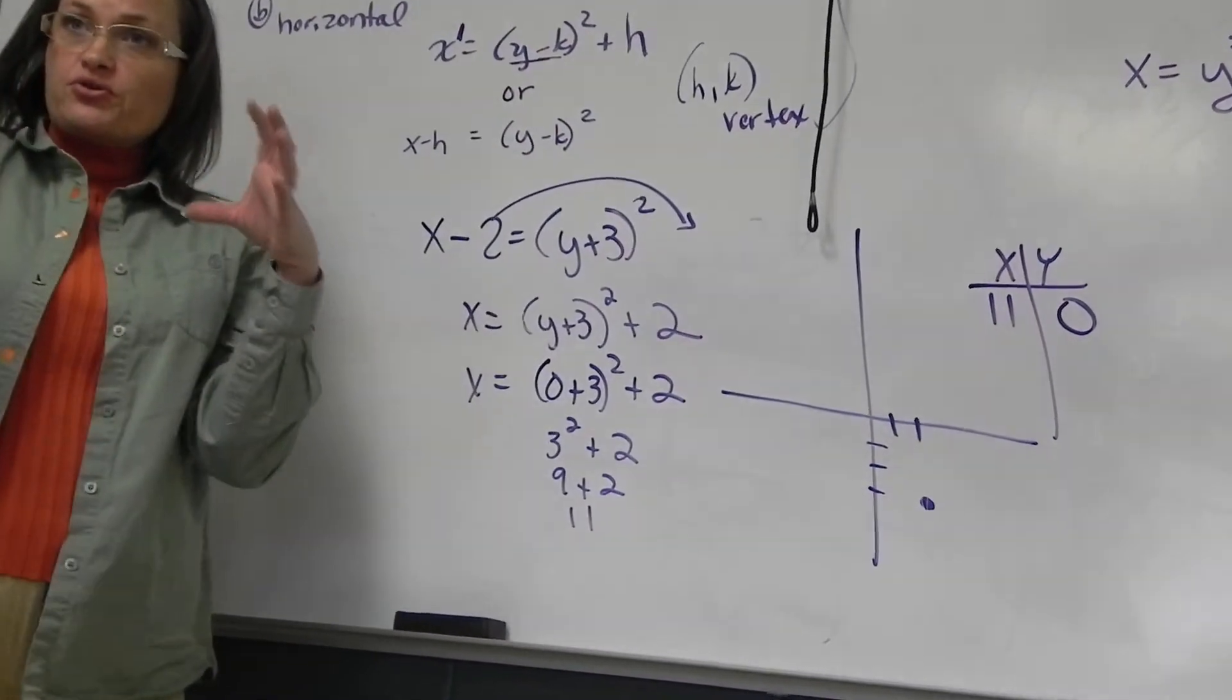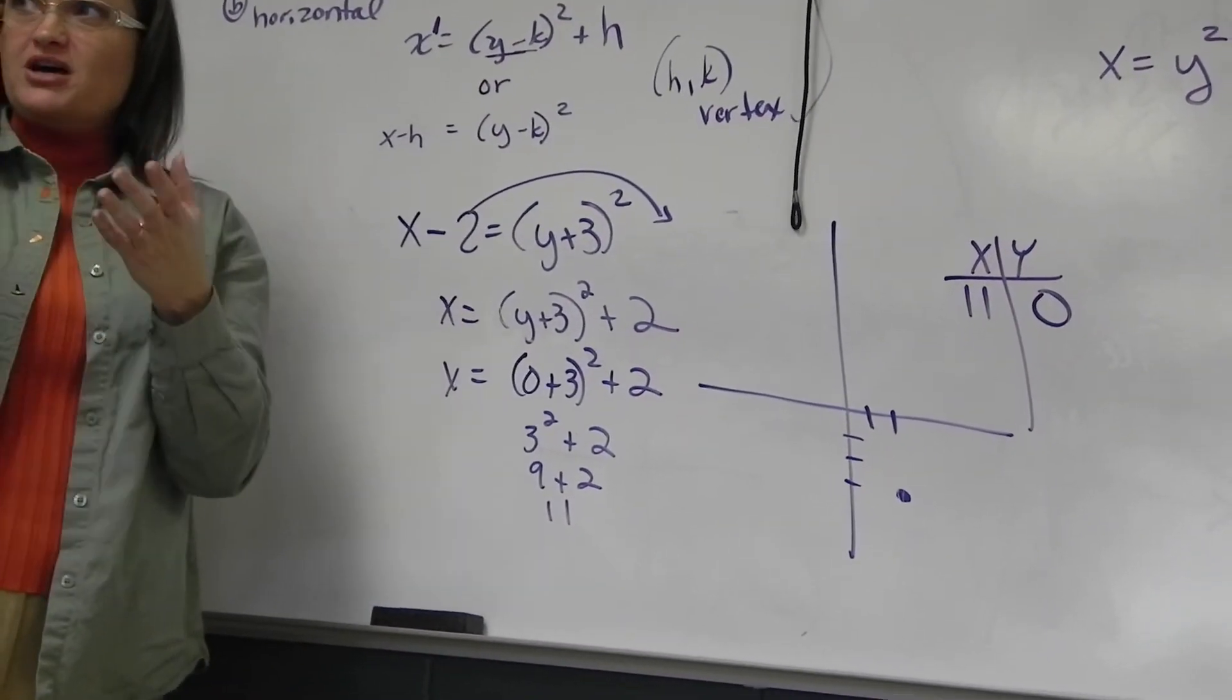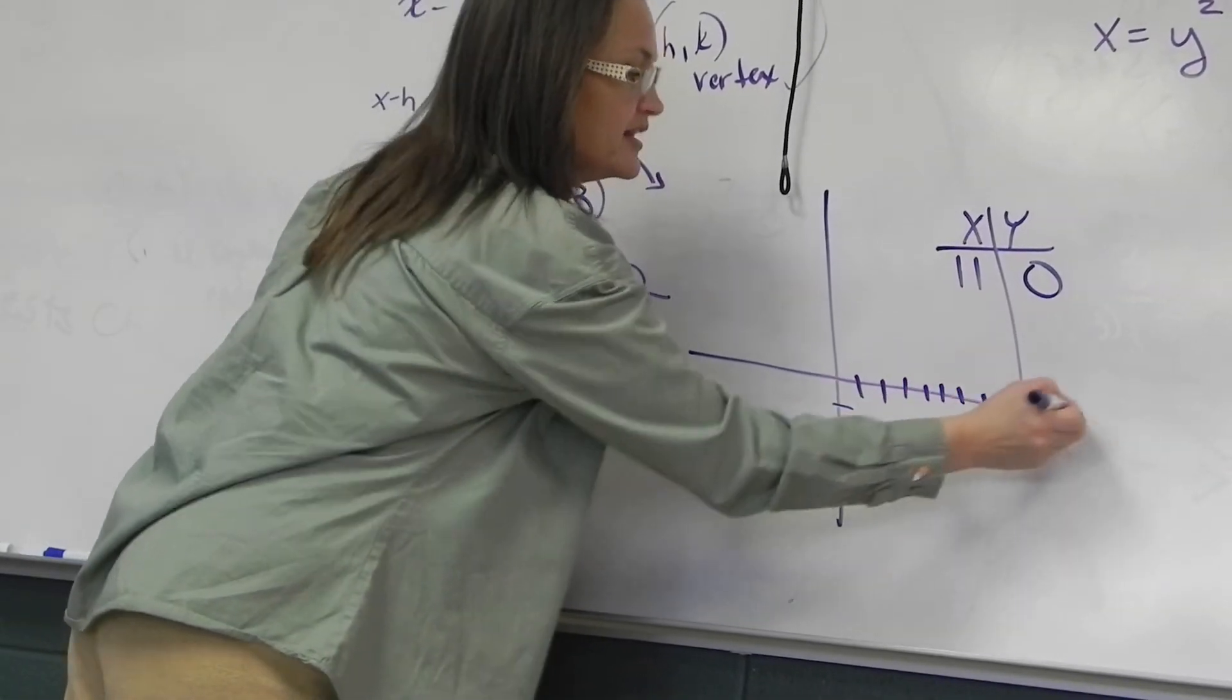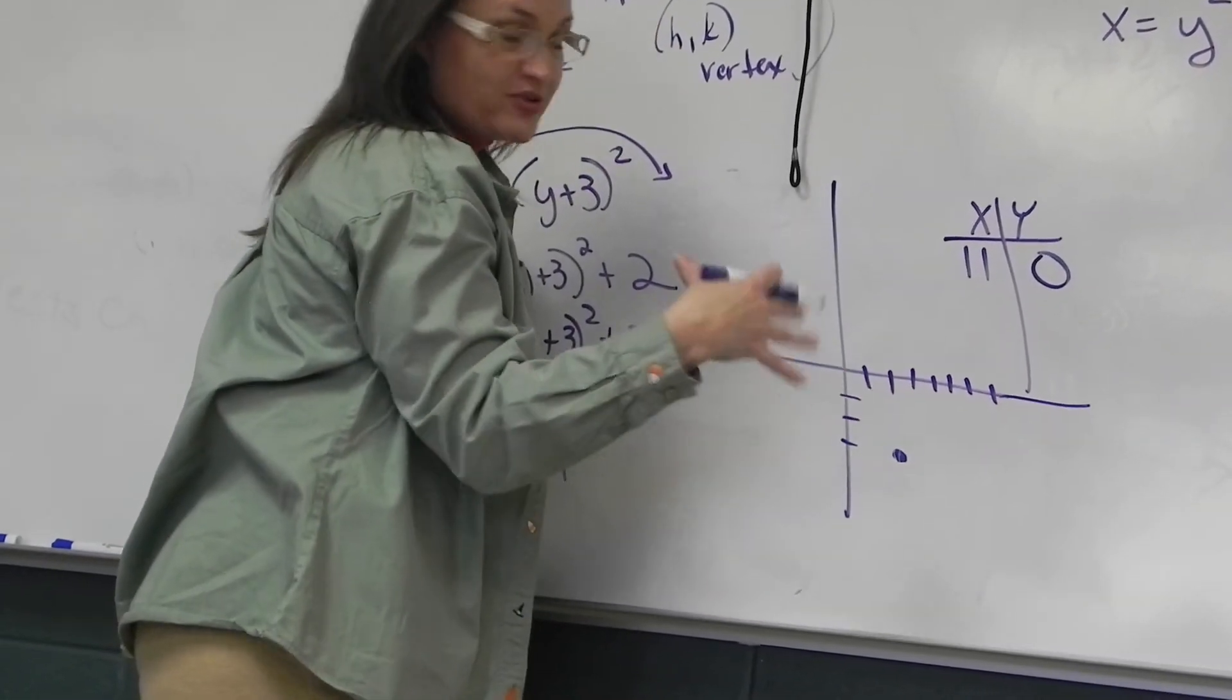0 plus 3 squared plus 2. 3 squared plus 2 is 11. If that won't fit on your graph, I can't remember if it goes past 10. Some graphs do and some graphs don't. If that won't fit, then I need to pick a different number. Find something that'll fit on your graph.